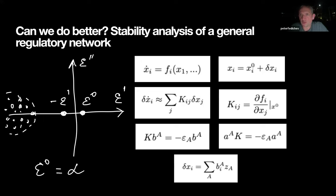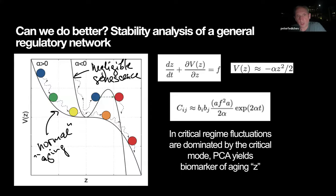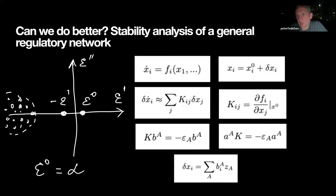Depending on the spectrum of eigenvalues of this Jacobian, you can have totally different dynamic properties. Far to the left on the complex eigenvalue plane are overdamped stress responses — the system is disturbed and goes back to norm. Close to zero, as Kauffman demonstrated, are a few eigenvalues corresponding to slow dynamics, and aging is definitely one of them. These correspond to the central manifold — a small number of modes dominating long-term dynamics.